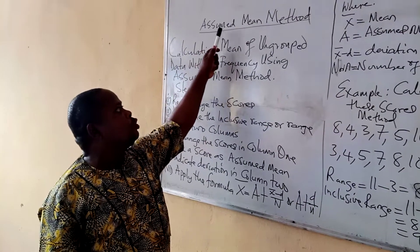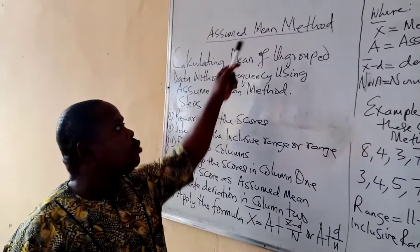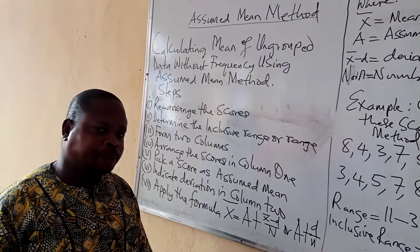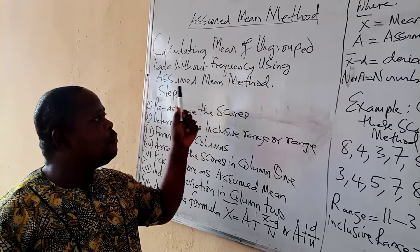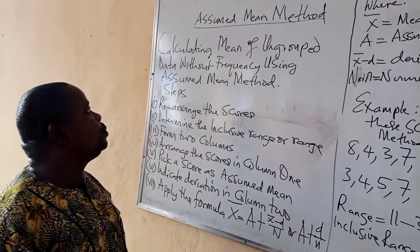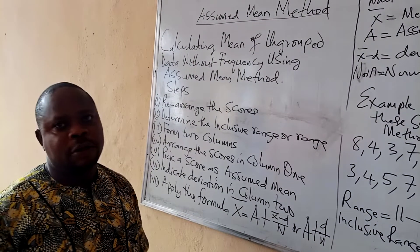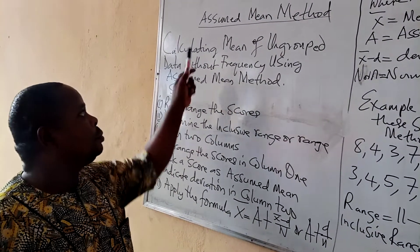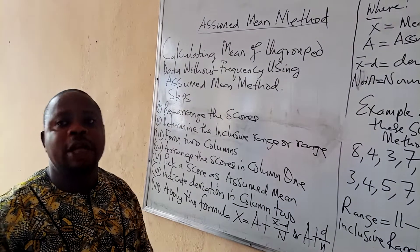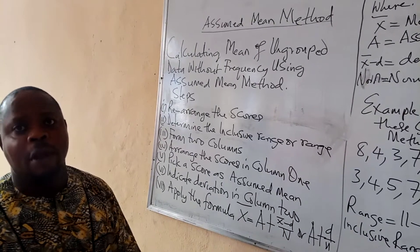Today we are looking at the assumed mean method. It is one of the methods used in calculating the mean of a data. We previously looked at calculating mean using the raw score method, and so this is another method — the assumed mean method — used in calculating the mean of a data.